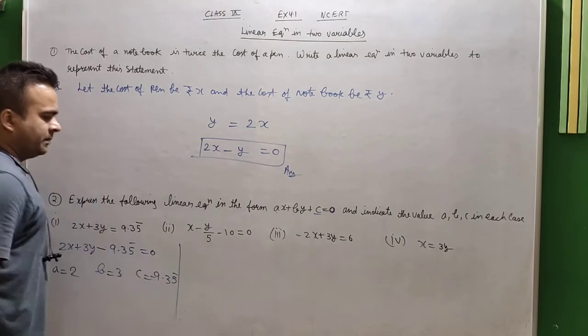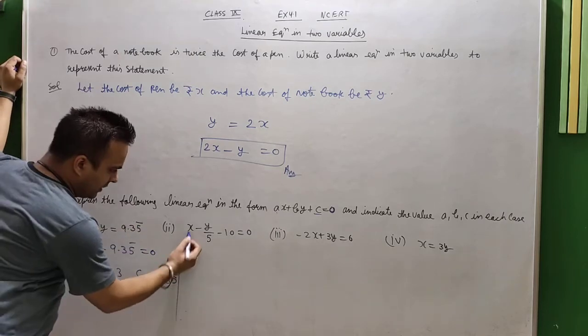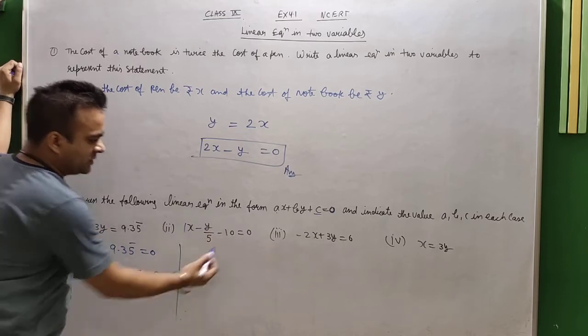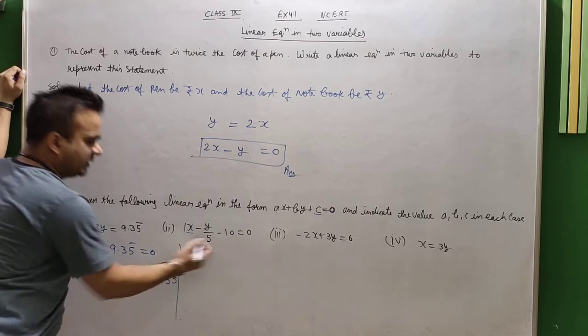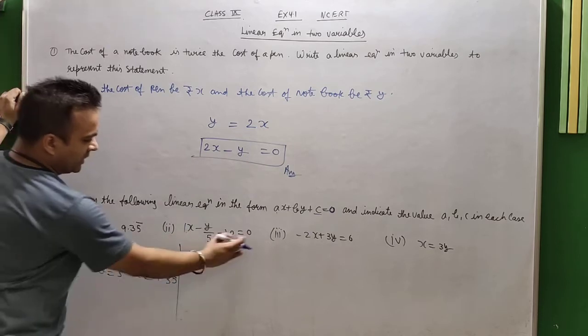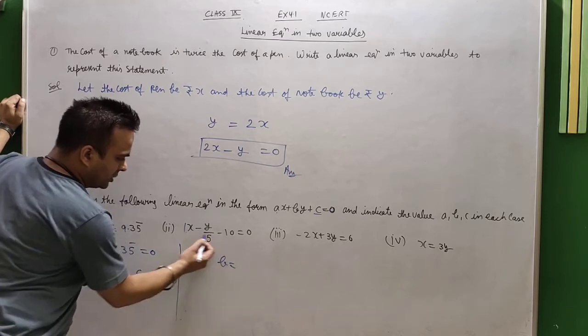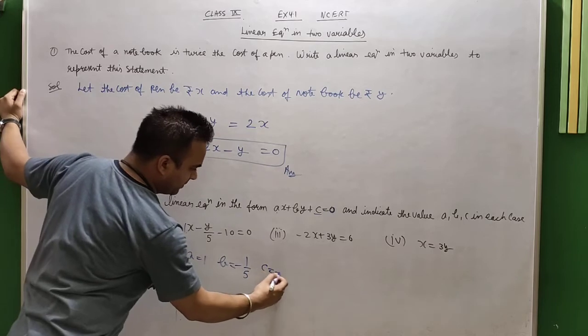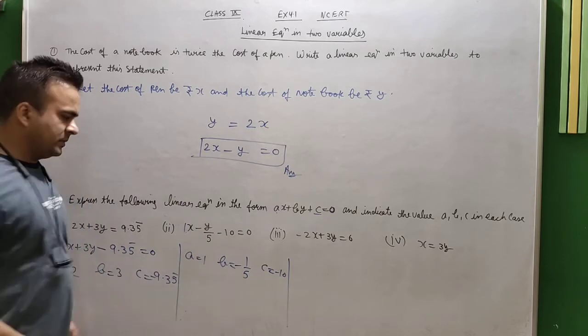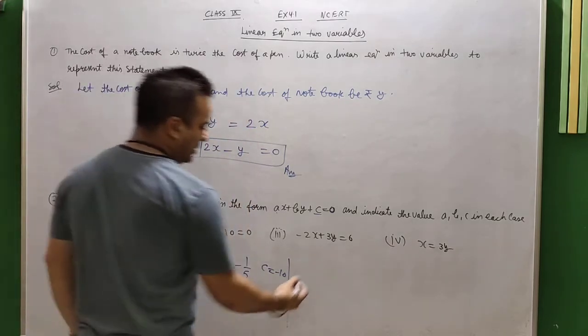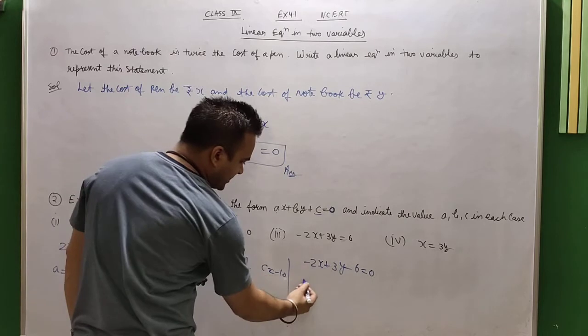If I look at this equation, x minus y upon 5 minus 10 equals 0. You might say that it is in standard form. But if we put values, a equals 1, b equals minus 1 upon 5, c equals minus 10. That is correct, but if you want to elaborate this, then take 5 as LCM. You will get 5x minus y minus 50 equals 0 in standard form.